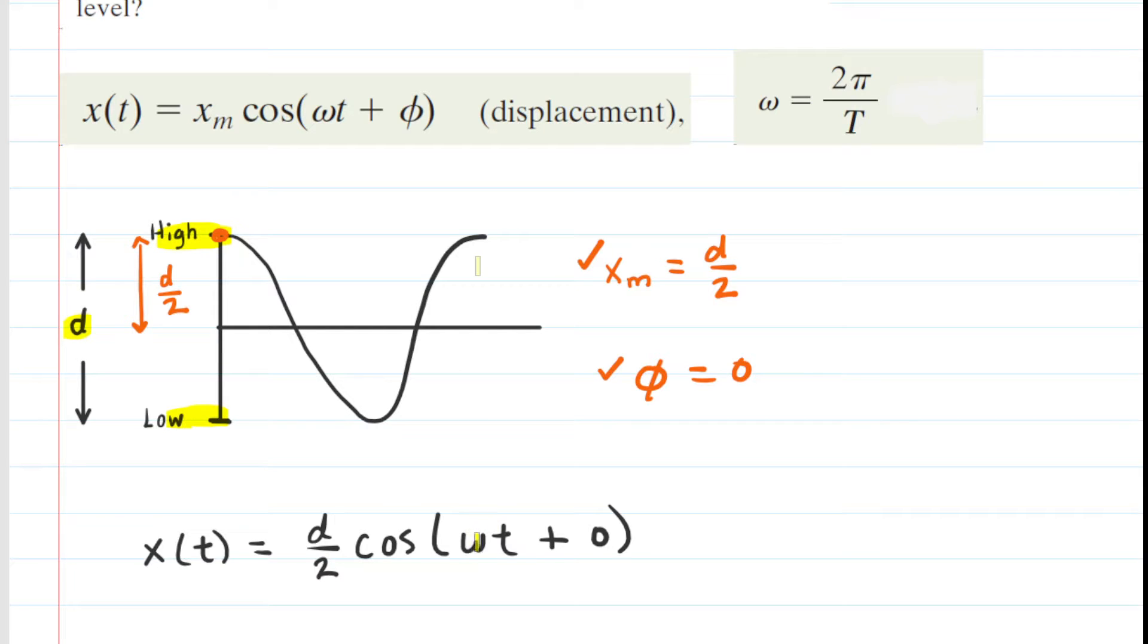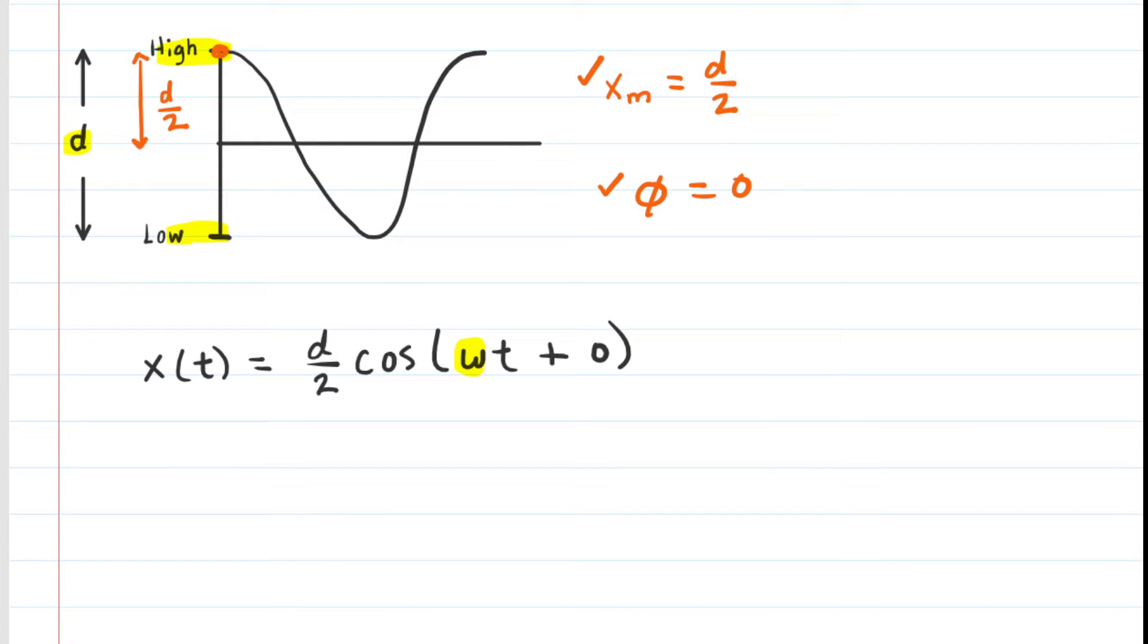Now, in addition, we know that omega, this angular frequency, can be substituted with the expression 2π divided by the period. And we're going to want to do that because the question gives us the period of the motion of the water. So let's make that substitution next.